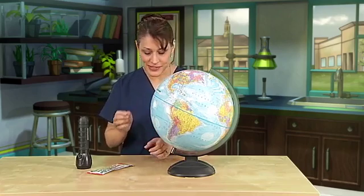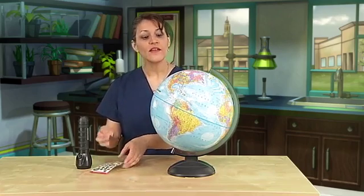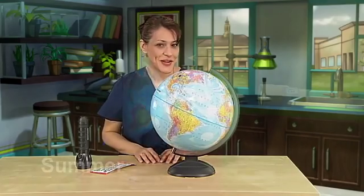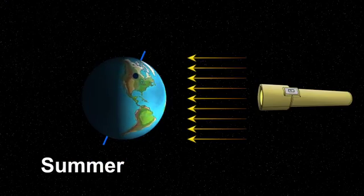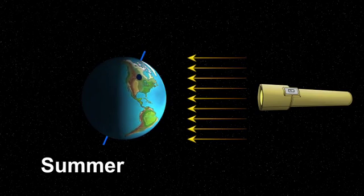This is all because of a little tilt on our axis. Here's how it works. We'll start in the summer, and we'll say that you live here, somewhere in North America. Pretend that this flashlight is the sun. Since it is the summer, here in North America,